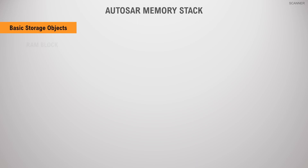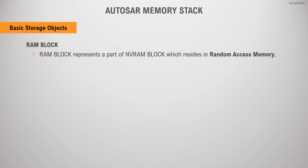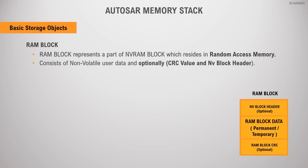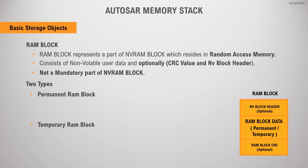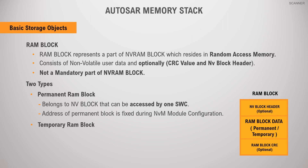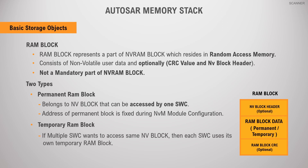A RAM block represents a part of the NVRAM block which resides in random access memory. It is used to hold live data from application software. It consists of non-volatile user data and, optionally, a CRC value and NVRAM block header. The RAM block is not a mandatory part of the NVRAM block. A RAM data block can be either a permanent RAM data block or a temporary RAM data block. A permanent RAM block belongs to a non-volatile block that can be accessed only by one application, and its address is fixed and defined during NVM module configuration. If multiple applications access the same NV block, each application uses its own temporary RAM block. The address of a temporary RAM data block is not defined by a configuration parameter but is passed to the NVM module during runtime.